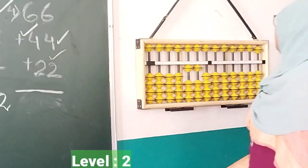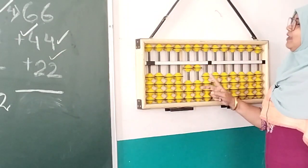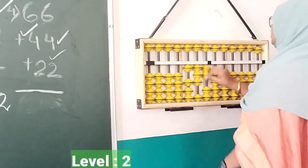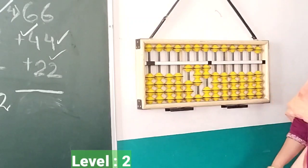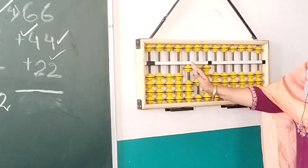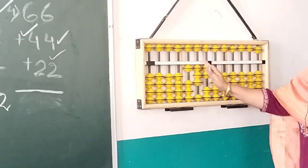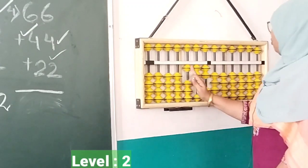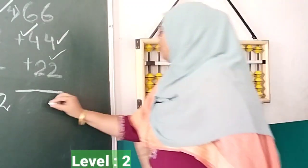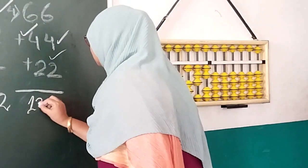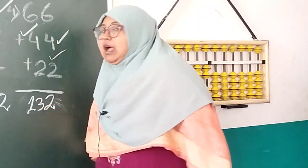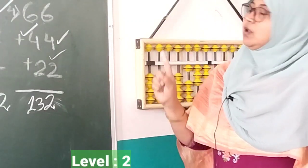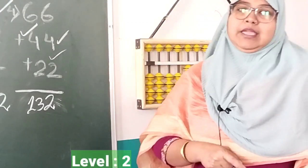For twenty-two, we have available beads in the ones and tens place, so we do it directly: two with index, two with thumb. The answer is one in the hundreds place, three in the tens place, and two in the ones place — one hundred thirty-two. I hope your jumping sums problems are now clear. Thank you.